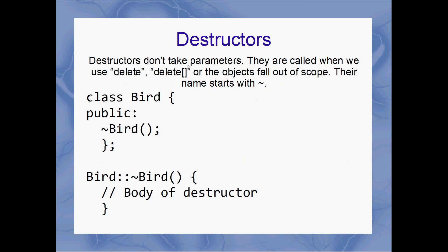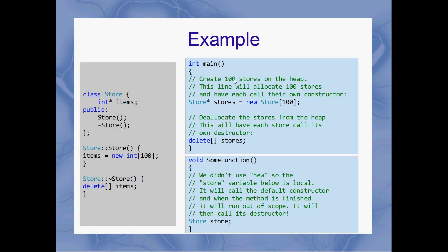Onto destructors — destructors don't take any parameters. They're called when we use `delete` or `delete[]`, or automatically when objects fall out of scope. Scope is the lifetime of an object, so when an object dies because maybe the function it was created in has finished, the object is said to have fallen out of scope, and it'll have its destructor called automatically. Destructor names start with a tilde. Inside the body of the destructor, you deallocate anything that the object had previously allocated. If you've not allocated anything, there's really no point in having a destructor.